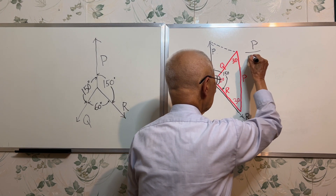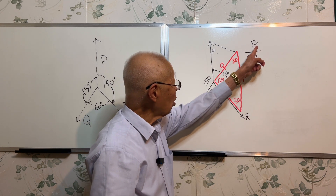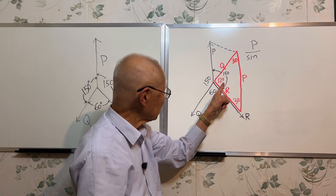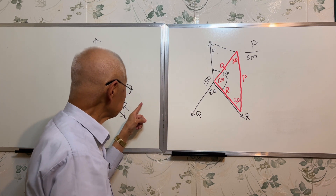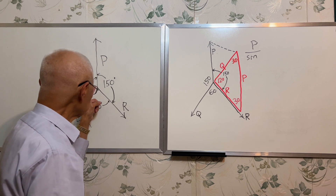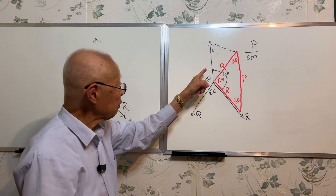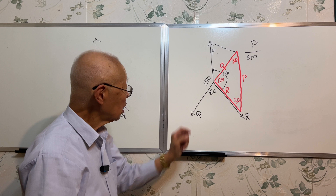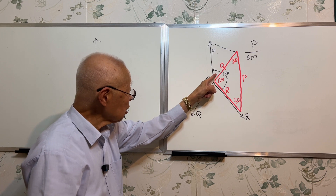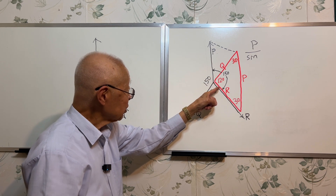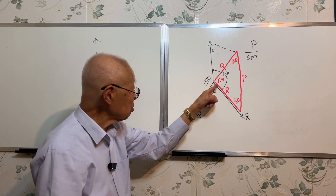P over sine of the angle here. The given relation is 150 degrees here and 160 degrees here, so this is 150 degrees. And because this angle is 60 degrees, therefore the angle between Q and R in this triangle is 120 degrees.